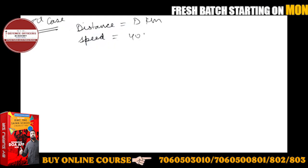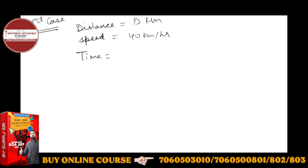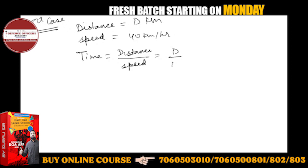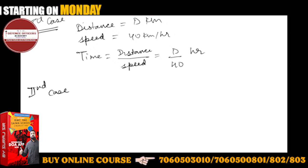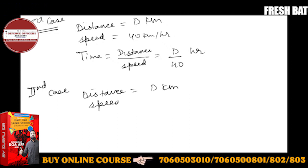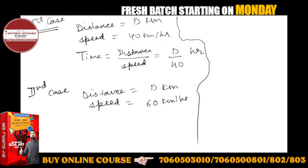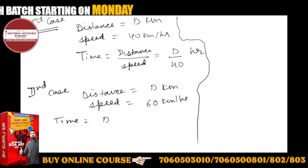For the freight train, speed is 40 km per hour. Since speed equals distance divided by time, time equals distance divided by speed — so time T1 equals D divided by 40. For the express train in the second case, it covers the same distance at 60 km per hour, so time T2 equals D divided by 60.